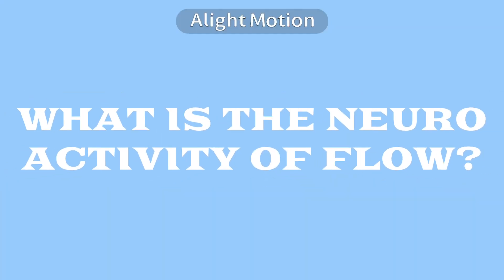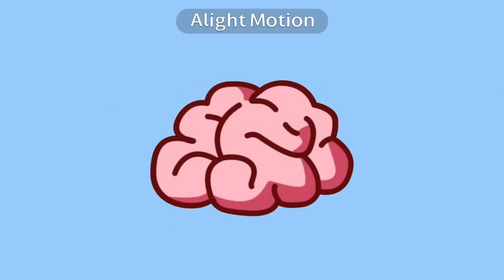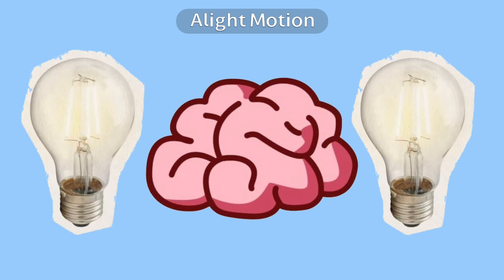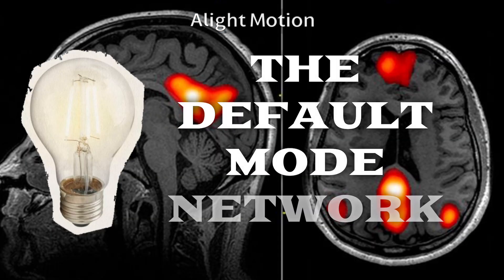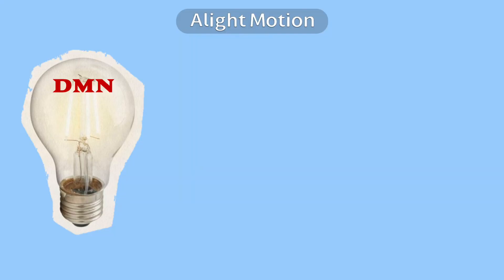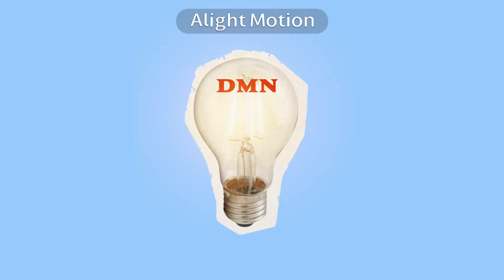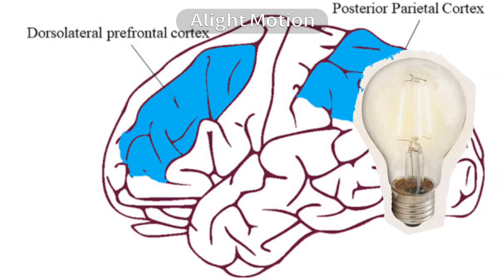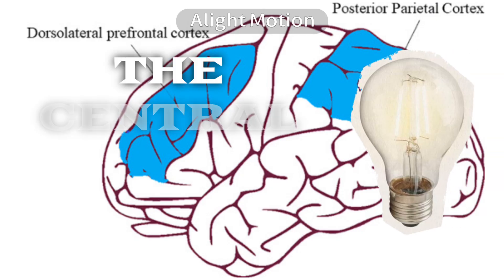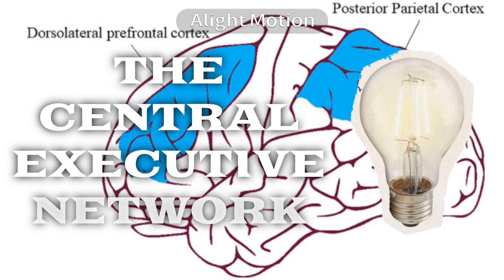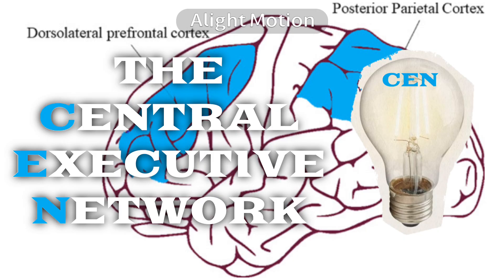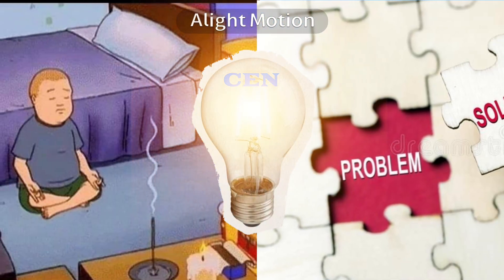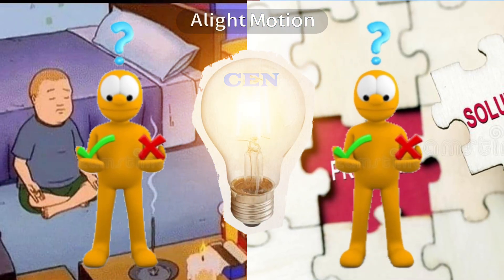But what is the neural activity of flow? Imagine your brain has two light bulbs. One is the default mode network, DMN, which lights up when you are daydreaming or thinking about yourself. The other is the central executive network, CEN, which turns on when you are focused, solving a problem, or making a decision.